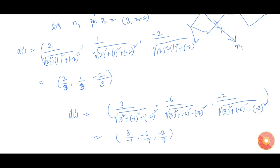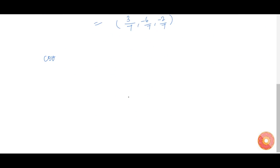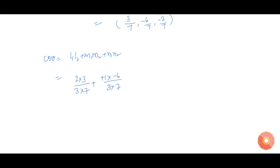Let us find the angle between them. Cos theta is given by l1·l2 plus m1·m2 plus n1·n2, where l, m, n are the respective DCs. This equals 2 into 3 by 3 into 7, plus 1 into minus 6 by 3 into 7, plus minus 2 into minus 2 by 3 into 7, which equals 4 by 21. Therefore cos theta equals 4 by 21, and theta equals cos inverse of 4 by 21.